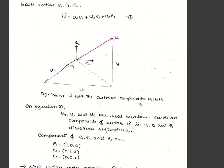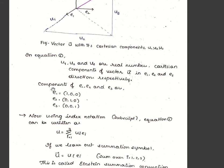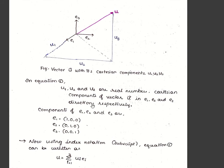Vector u has Cartesian components u1, u2, u3, represented with basis vectors e1, e2, e3. The components of the basis vectors are: e1 = (1, 0, 0), meaning only the first coordinate is active; e2 = (0, 1, 0), with the second coordinate active; and e3 = (0, 0, 1), with the third coordinate active and the other two zero.